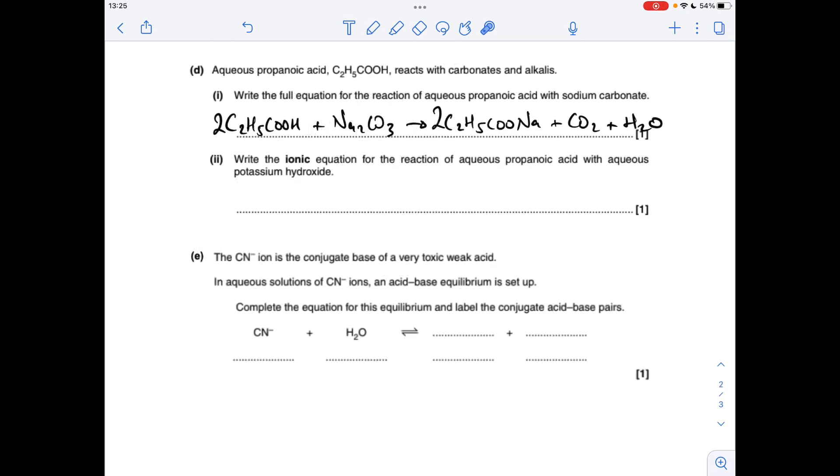Couple of equations now. The full equation for the reaction between aqueous propanoic acid and sodium carbonate: acid, carbonate, salt, carbon dioxide and water. Just be careful you get the formulas of your salt right. Sodium propanoate is just a one to one ratio with the ions, because they're both 1- and 1+. So that's how that one looks.